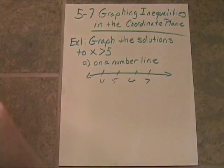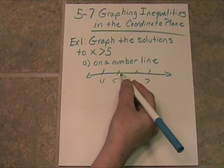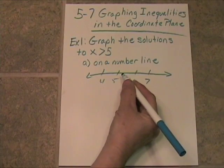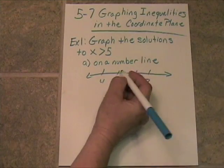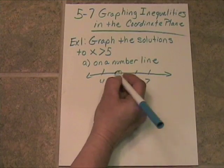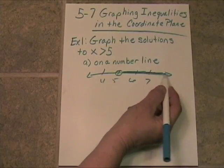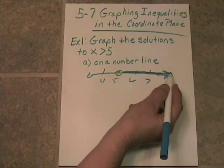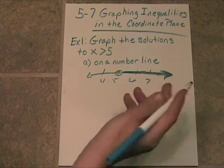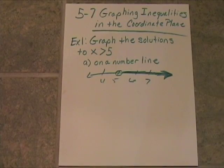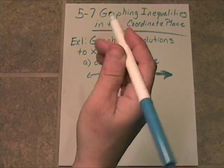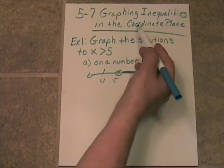So you could get very close to 5, like 5 and 1 millionth, but not including 5. So we put an open circle on the 5, and we shade everything to the right. Now, you learned this back in elementary school and definitely in your pre-algebra class, but that's just a number line. That's not the coordinate plane.